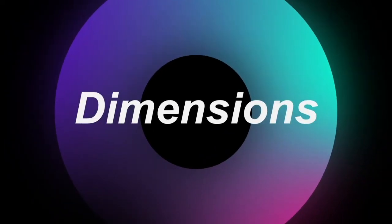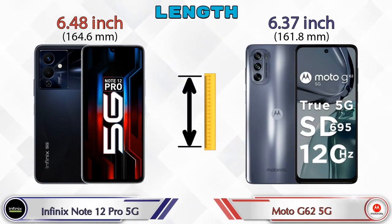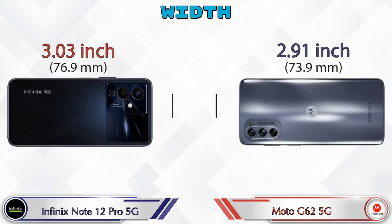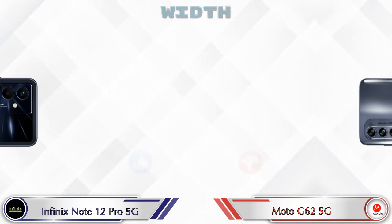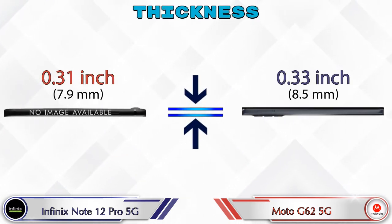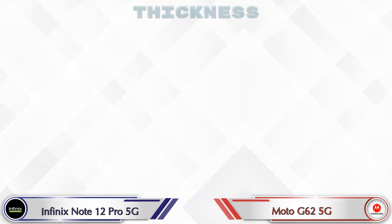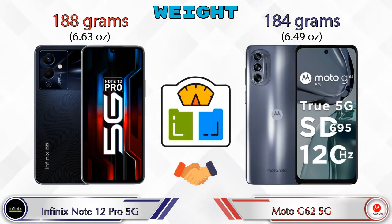Now let's check the dimensions. The Note 12 Pro 5G has a length of 6.48 inches and the Moto G62 5G is 6.37 inches. Width: the Note 12 Pro 5G is 3.03 inches and the Moto G62 5G is 2.91 inches, which is less. Thickness: the Note 12 Pro 5G is 0.31 inches and the Moto G62 5G is 0.33 inches, which is slightly thicker.